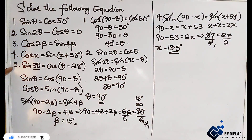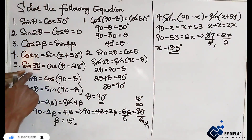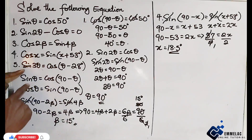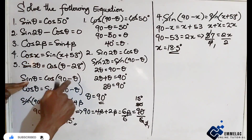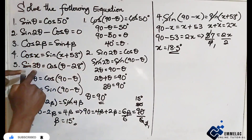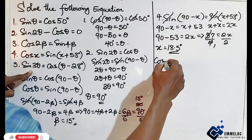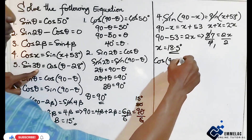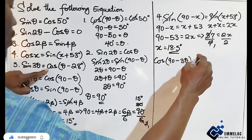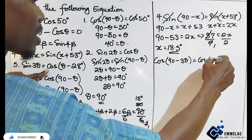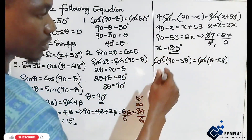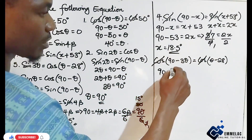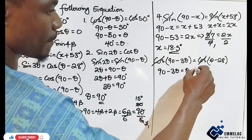For number 5, we have sine 3 theta. We use the sine-to-cosine relation, replacing theta with 3 theta: cos of 90 minus 3 theta equals cos of theta minus 28. Eliminating cos, we get: 90 minus 3 theta equals theta minus 28.